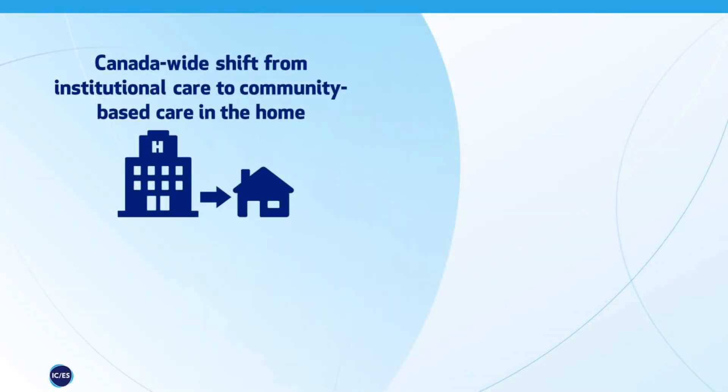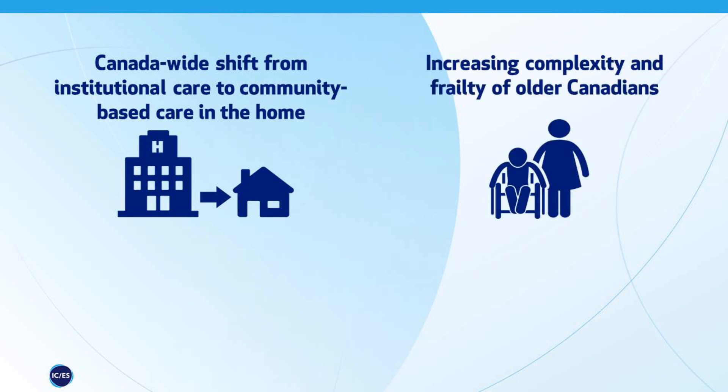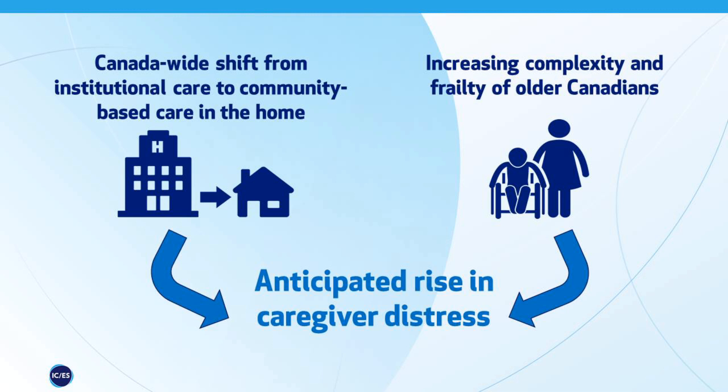In terms of implications, we are seeing across Canada a tremendous shift in health care reforms from institutional to community-based settings. As we witness that, we're worried about the potential stress on caregivers and the supports they might need, as well as home care clients. As we see that shift and the increase in complexity and frailty level among home care clients, we anticipate that caregiver distress will only increase in the future.